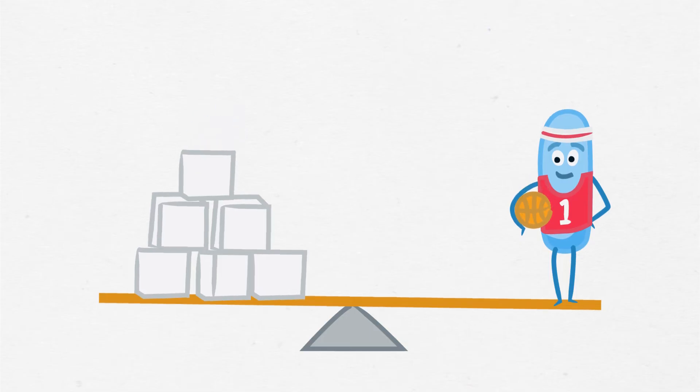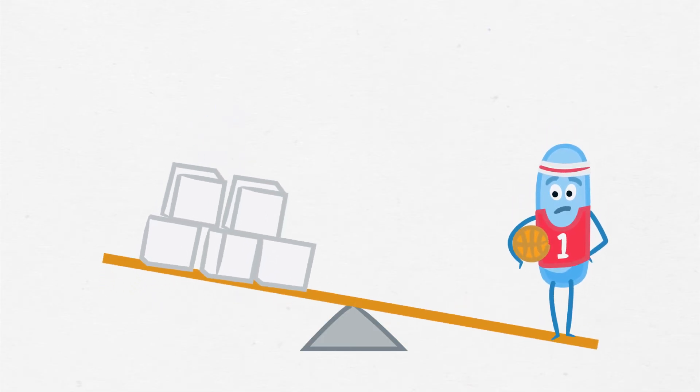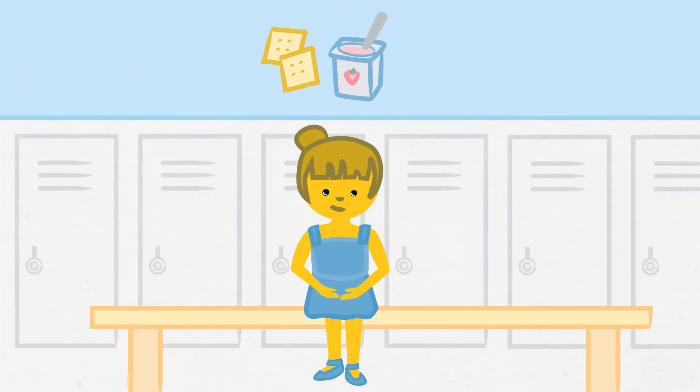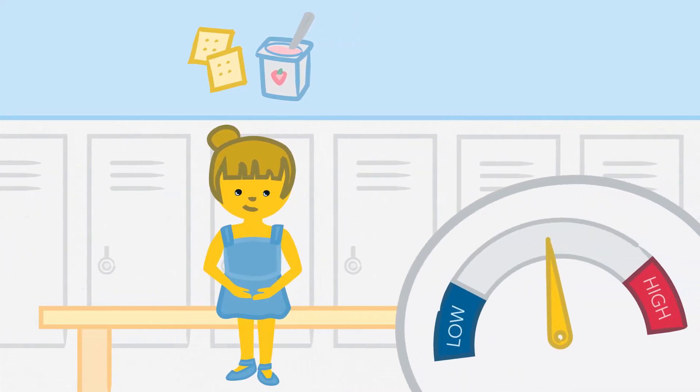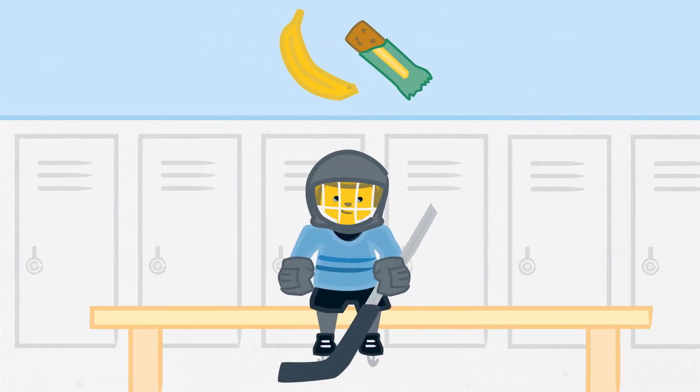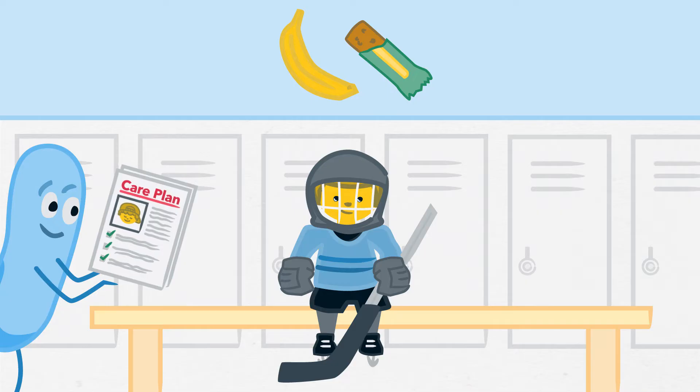Physical activity usually lowers blood sugar, so students always need their glucose meter and emergency kit nearby. Some students will need an extra snack before starting an activity, especially if their blood sugar is in the target range or is going low. The amount of food depends on the student and the type of activity. The student's care plan will have these details.